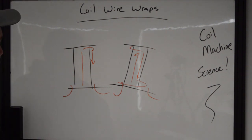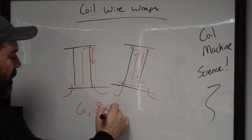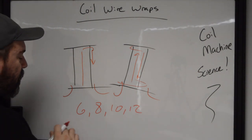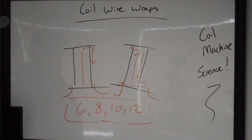So what do the wraps mean? So if we have, we'll just go over this: six, eight, 10, and 12 are the most common amount of wraps that we're going to see in commercially available tattoo machines.